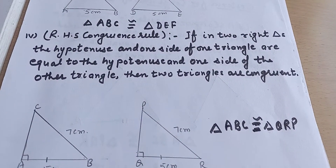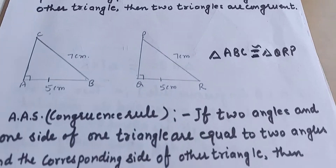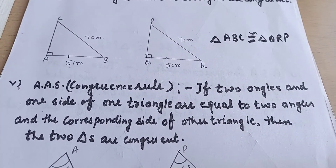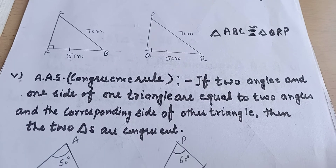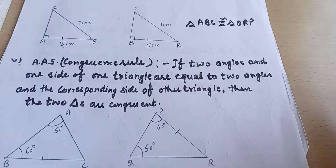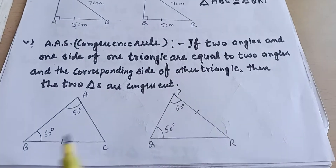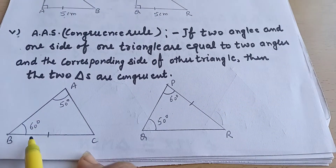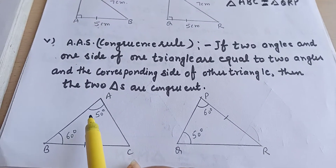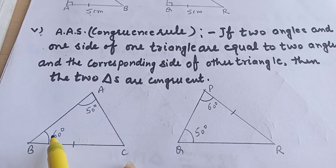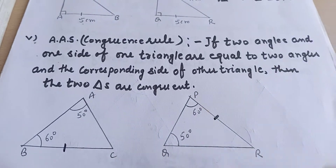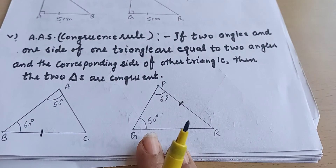Till this, you have done in class 7th. Now there is one more criteria: AAS (Angle-Angle-Side). If any two angles and one corresponding side of a triangle are equal to any two angles and the corresponding side of another triangle, then the triangles are congruent. Note that if two angles of a triangle are equal, then the third angle will automatically also be equal. So if angles 50° and 60° and one side are equal in both triangles, the triangles will be congruent.